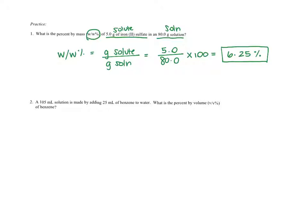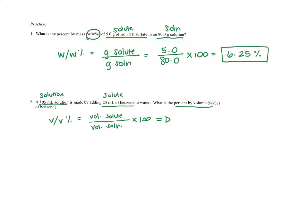Problem two: 105 milliliters of solution is made by adding 25 milliliters of benzene to water. The 105 milliliters is the whole solution. Water is the universal solvent, which means benzene is the solute. We need to find the percent by volume (v/v). V over V means volume of solute over volume of solution times 100. I plug in 25 milliliters of solute and 105 milliliters of solution.